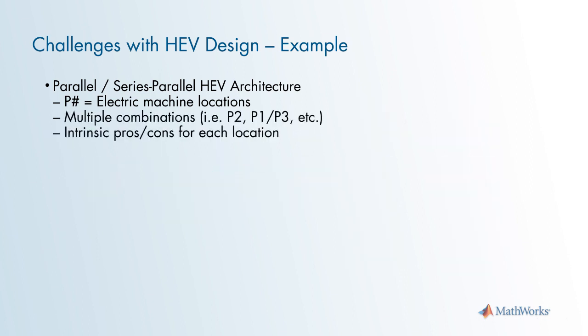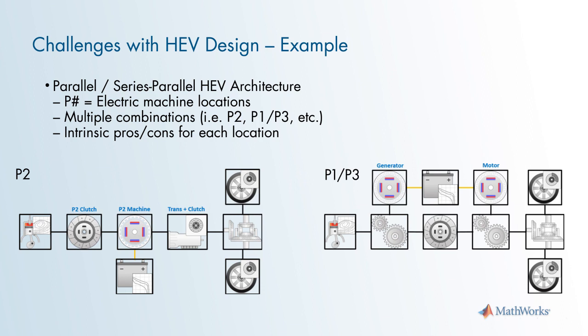You can have multiple combinations of machine locations, and there are intrinsic pros and cons for each machine location. Here are a couple of examples of a parallel and series parallel architecture. The P2 parallel architecture has a single machine with a disconnect clutch allowing for full electric or EV mode, as well as parallel hybrid mode, meaning the engine and motor will provide power at the same time. The P1 slash P3 series parallel architecture allows for EV mode, series hybrid mode, and parallel hybrid mode. There are other architectures as well, including input power split architectures. But you can see how many combinations there are just for the parallel slash series parallel topologies, and it would be too time consuming to build physical prototypes of all the combinations possible. Assessing the intrinsic pros and cons of these different architectures by modeling and simulating them virtually is a much more efficient approach.